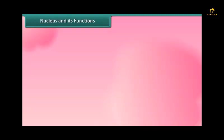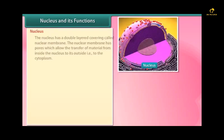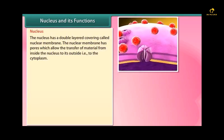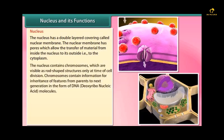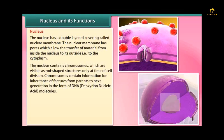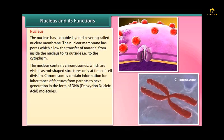Nucleus and its functions: The nucleus has a double layered covering called nuclear membrane. The nuclear membrane has pores which allow the transfer of material from inside the nucleus to its outside, that is to the cytoplasm. The nucleus contains chromosomes which are visible as rod shaped structures only at time of cell division.